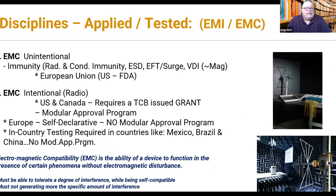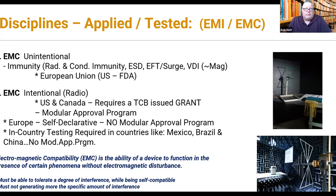Moving into EMC — within EMC you have unintentional, meaning not intended to radiate, and intentional, which is a radio device. Electromagnetic compatibility is defined as the ability of the device to function in the presence of a certain phenomenon without electrical disturbance. It must handle a certain degree of interference while being self-compatible and must not generate more than a specific amount of interference. In Europe, this is required. The FDA for medical devices has also required a suite of susceptibility tests, including radiated and conducted immunity, electrostatic discharge, electrical fast transients, surges, voltage dips, and interrupts representing a brownout situation.